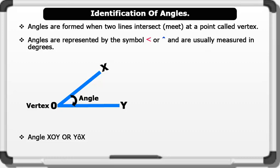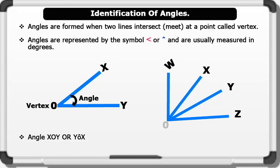Note that there are two lines. The lines x, y and z meet at o. The angles formed are angle wox, angle woy and angle woz.